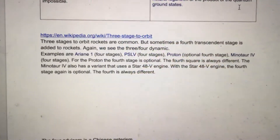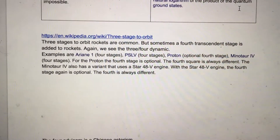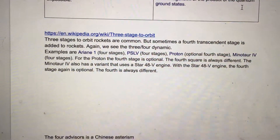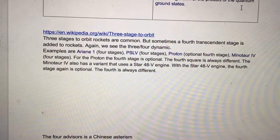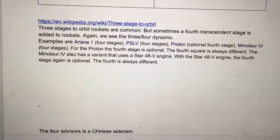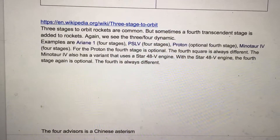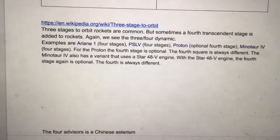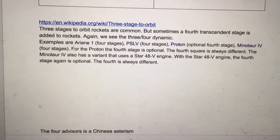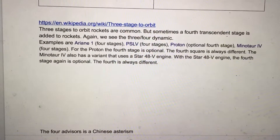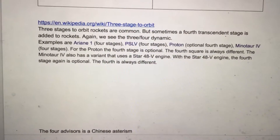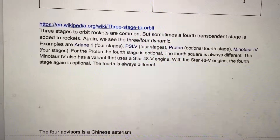Examples include Ariane 1, which has four stages; PSLV, four stages; Proton, with an optional fourth stage — again a three-plus-one. Minotaur 4 has four stages. For the Proton, the fourth stage is optional, and the fourth square is always different. The Minotaur 4 also has a variant that uses a Star 48V engine, where the fourth stage is again optional. The fourth is always different.